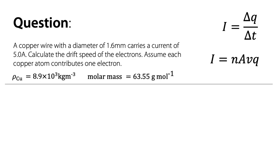So what do we need to know? We need to know I, we need to know n, we need to know A, we need to know q. I is given in the question, and q is just one electron, so the charge carrier is an electron.